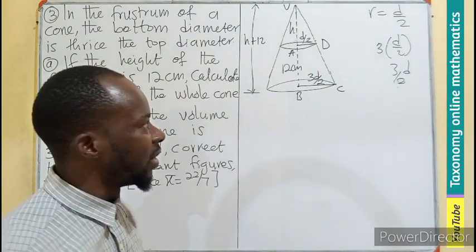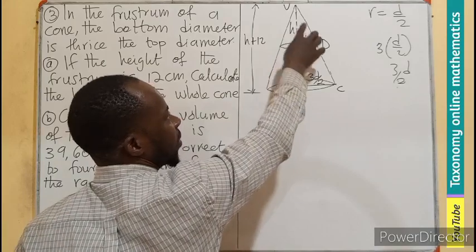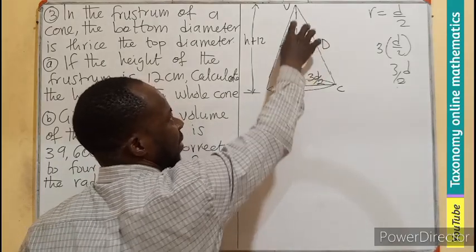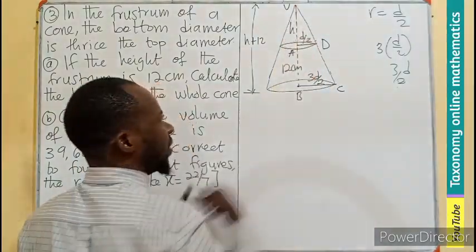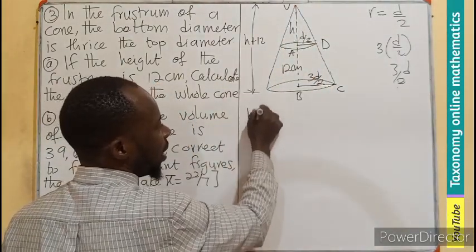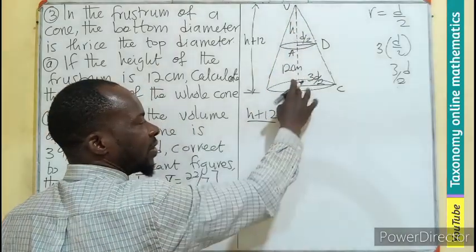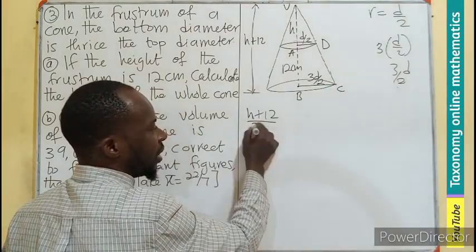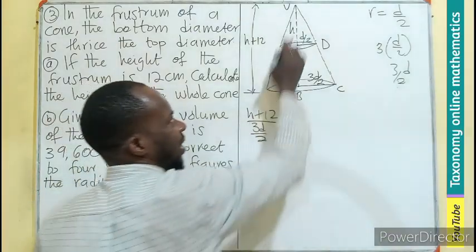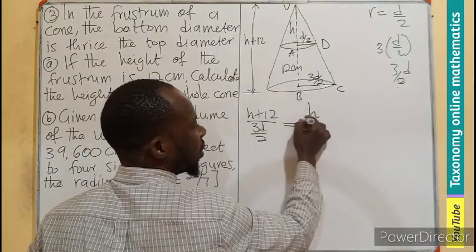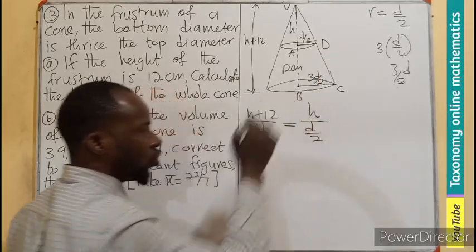Now let's find the ratio of their size since they are similar. The whole of this is H plus 12, which is the perpendicular height divided by the horizontal height, which is 3D over 2. It should be the same as the vertical height H divided by the horizontal length, which is D over 2.